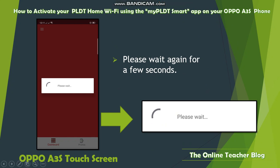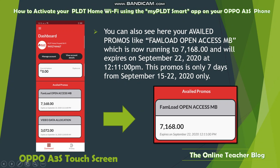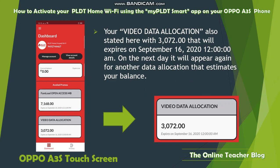Wait a few seconds in your dashboard. Your current balance will show zero or the remaining amount. Available promos include Come Load Open Access MB, currently running at 7168 MB, expiring September 22, 2020, which is a seven-day promo. Video data allocation of 3070 MB expires September 16, 2020, and resets the next day. Video data allocation is shown as 7072 MB.